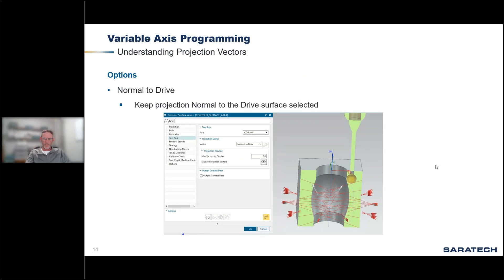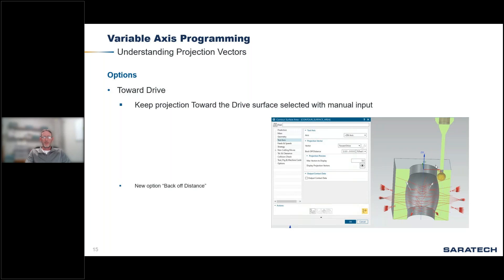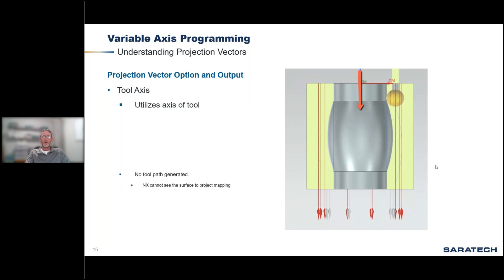Normal to drive — you can see how the vectors are overlapping because everything is trying to stay normal to the surface it's touching. NX is going to throw errors with this selection under a three-axis condition because it says it cannot move the tool normal to that surface to produce those projection vectors. Toward drive you can see it's going normal to the surface, but you have a back-off distance set to 100% of the tool — if it can't project, it backs off 100% of the tool and tries again. Not always the correct option.